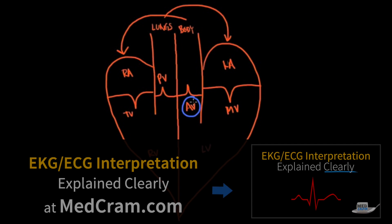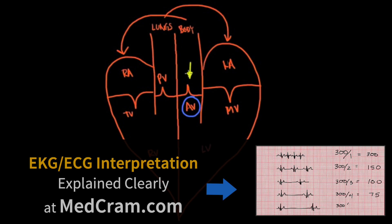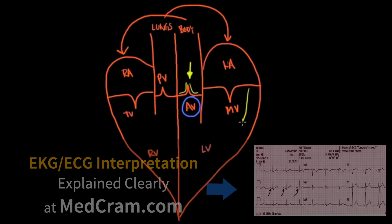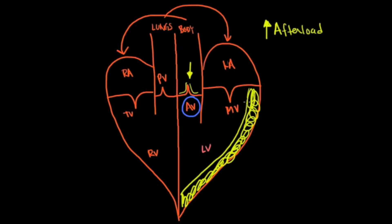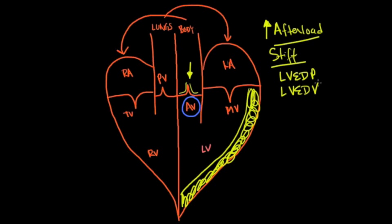Let's go over the pathophysiology. Because the valve doesn't open, we see hypertrophy — enlargement of the left ventricular wall. Afterload increases, and you see thickening of the left ventricular wall, called left ventricular hypertrophy. As the wall becomes very stiff, left ventricular end-diastolic pressure and left ventricular end-diastolic volume increase, with pressure specifically going up.